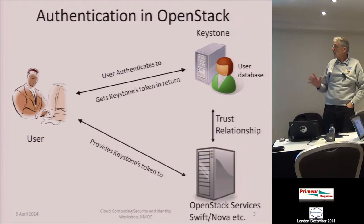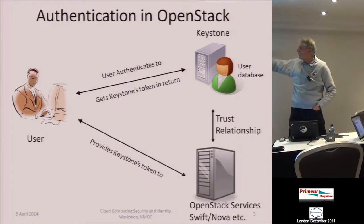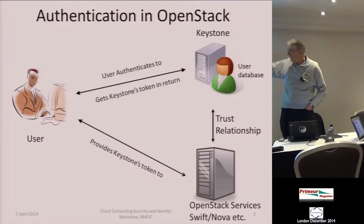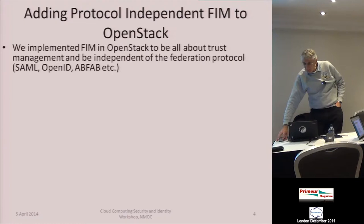When we started to work on OpenStack, the way authentication works is the user has a username and password in the Keystone database. Keystone is a service of OpenStack that does identity management — you have a username and password there, you authenticate, get a Keystone token.